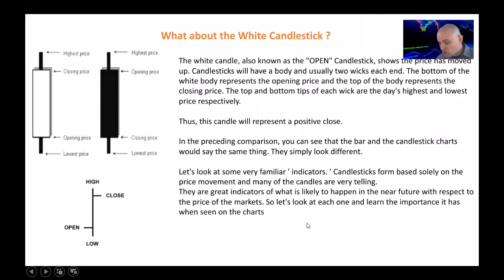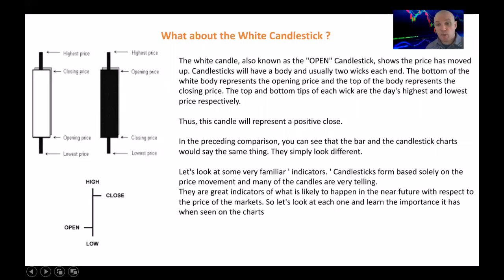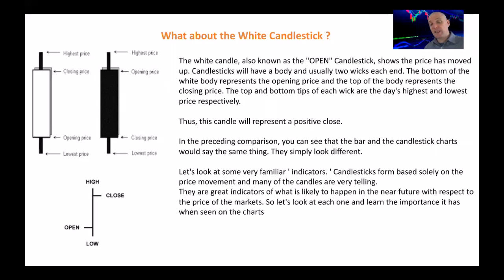Now we're concentrating on the white candlestick. Same preference, but this time we've had an opening price at the bottom. The white candle — also known as the open — shows the price has moved up. Candlesticks have a body and usually two wicks at each end. The bottom of the white body represents the opening price, and the top represents the closing price. The top and bottom of each wick are the highest and lowest points respectively for that timeframe. So this candle represents a positive close — this is where we opened and where we eventually closed, making it an upward candle.